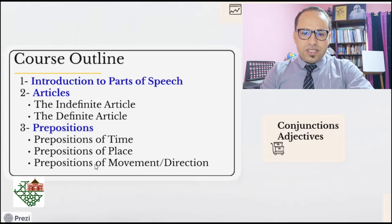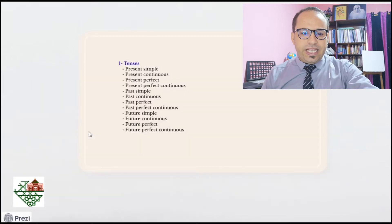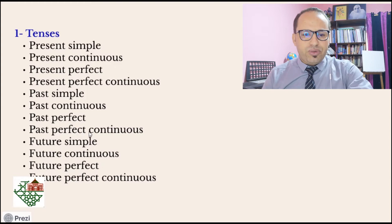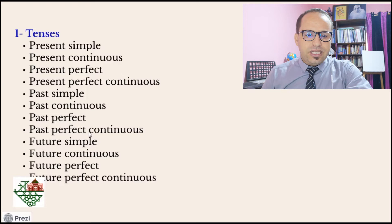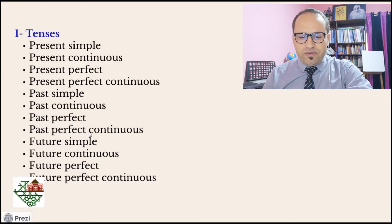After prepositions, we'll move to tenses. As you see, we have 12 tenses in the English language: the present simple, present continuous, present perfect, present perfect continuous, past simple, past continuous, past perfect, past perfect continuous, future simple, future continuous, future perfect, and future perfect continuous.